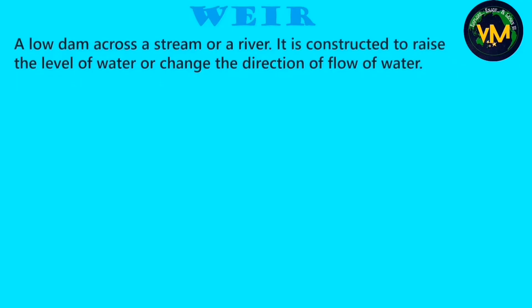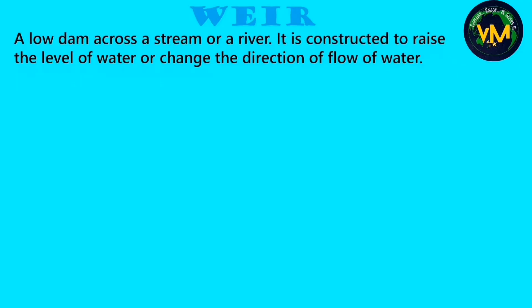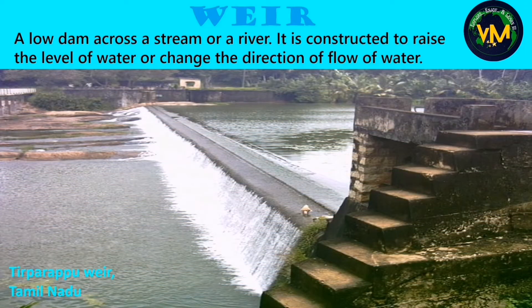A weir is a low dam constructed across a stream or a river in order to raise the level of the water or to change the direction of flow of the water. This is a picture of Tirparappu Weir in Tamil Nadu.